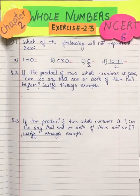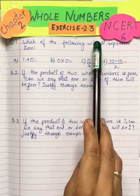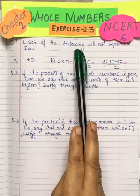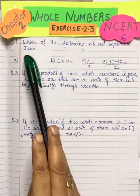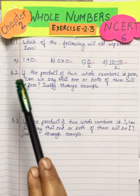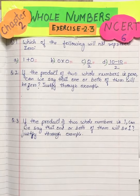Welcome back. Now let's do exercise 2.3. Let's do the first question. Which of the following will not represent zero? Which one will not have an answer as zero? So let's begin.